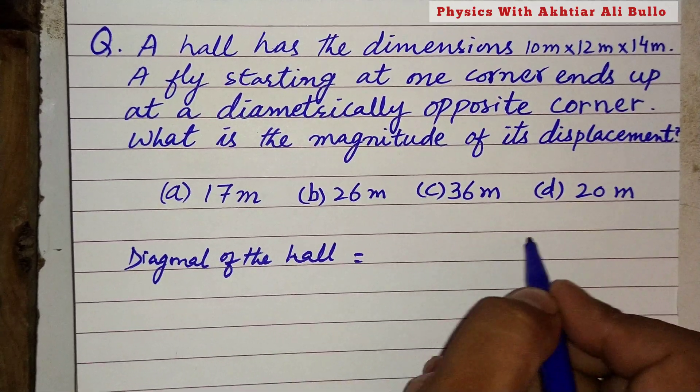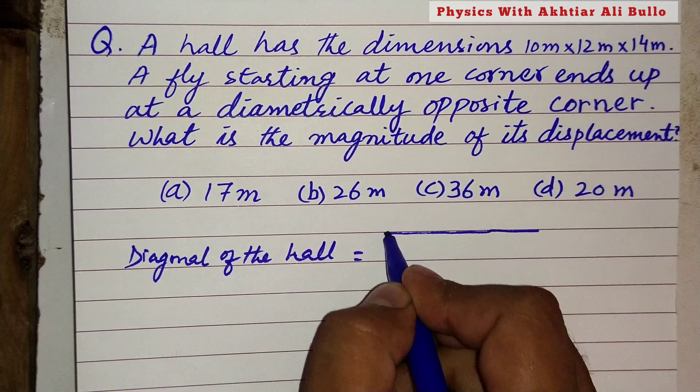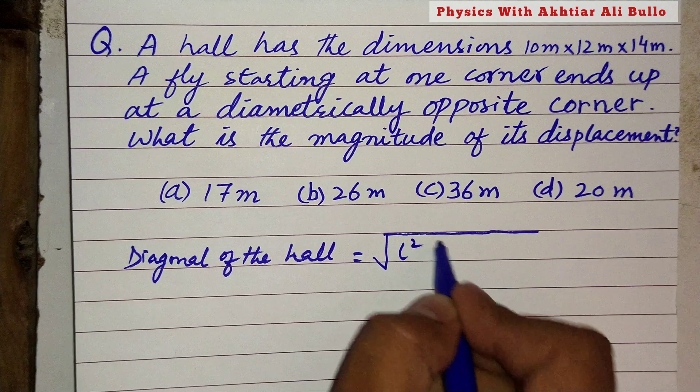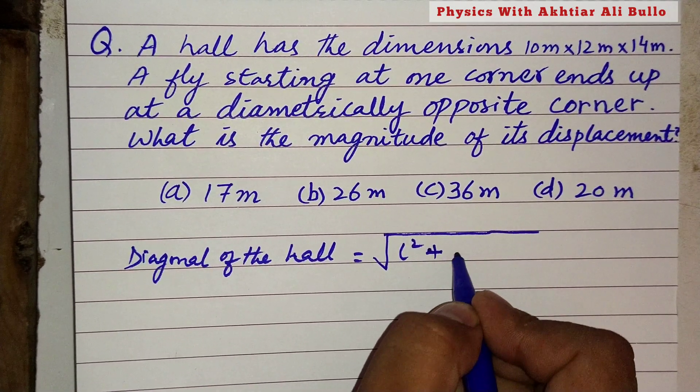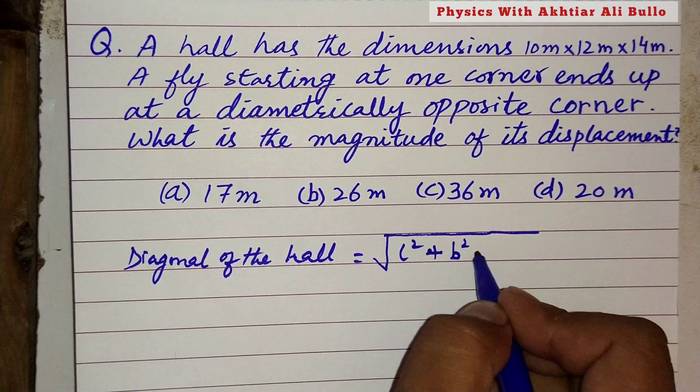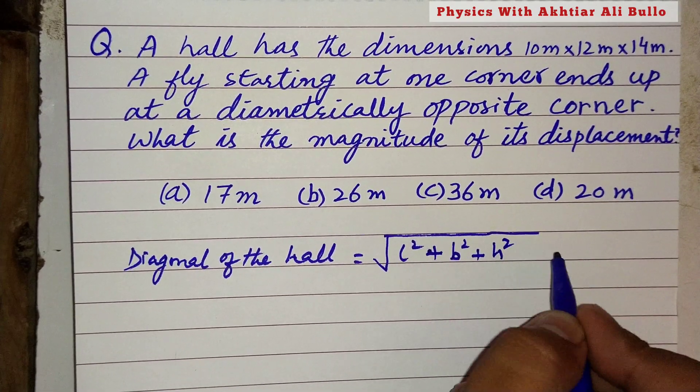The diagonal is equal to the square root of length squared plus breadth squared plus height squared.